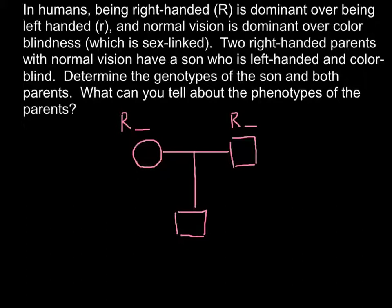We can say that the son is left-handed, which means he must have small r and small r — homozygous recessive — in order to be left-handed. If at least one allele were capital R, the son would be right-handed. This means each parent must also carry a small r allele, making them heterozygous. The son can then inherit one small r from the mother and one small r from the father.